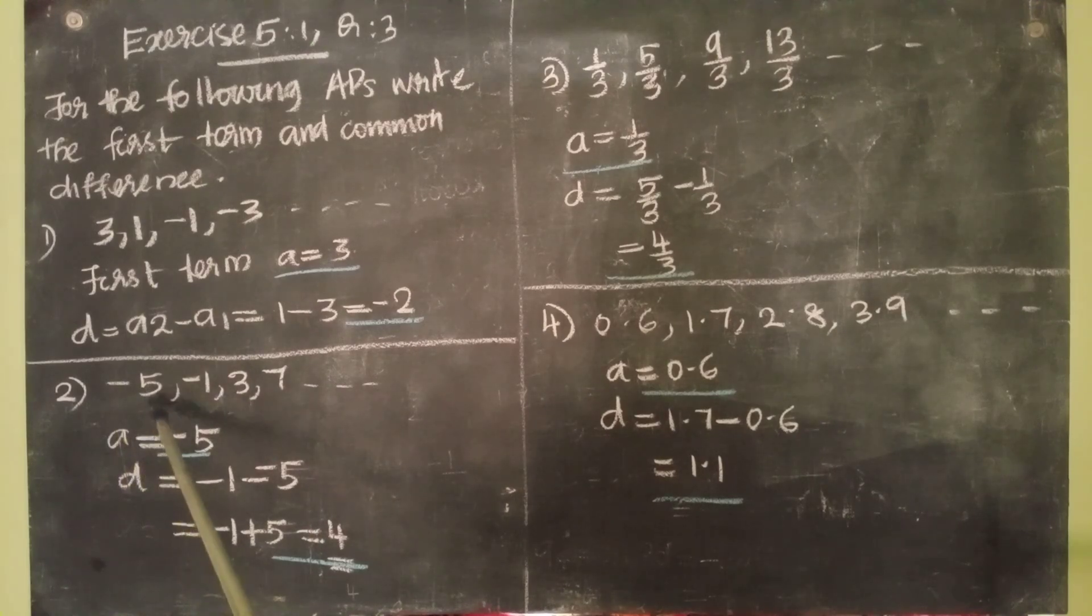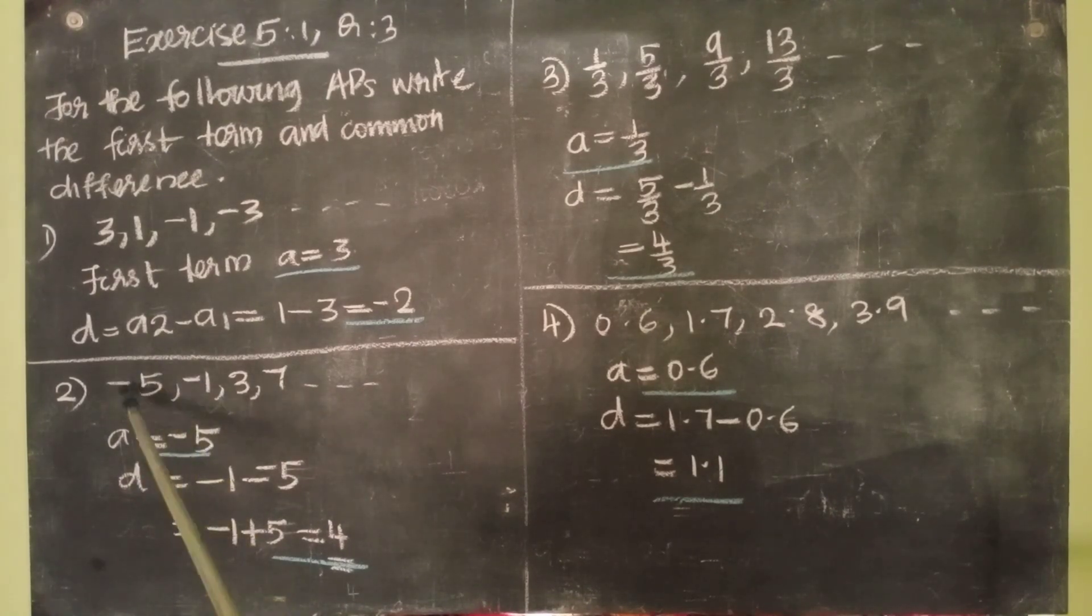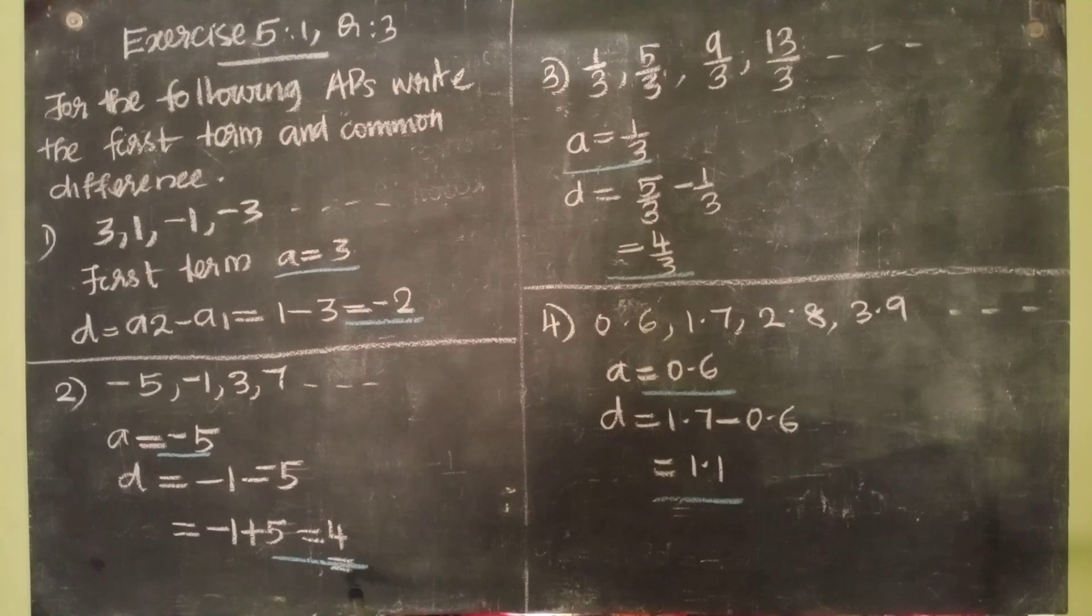Second question: minus 5, minus 1, 3, 7, etc. A equal to minus 5. D equal to minus 1 minus minus 5. That is equal to minus 1 plus 5, equal to 4.